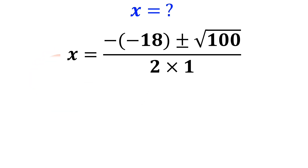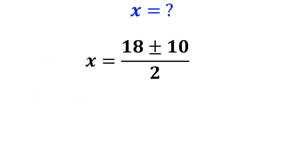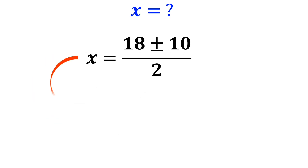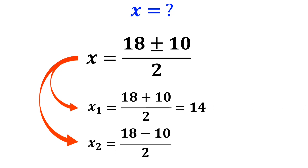This equation simplifies to x equals 18 plus or minus 10 over 2. Finally, the first x equals 18 plus 10 over 2, which equals 14. And the second x equals 18 minus 10 over 2, which equals 4.